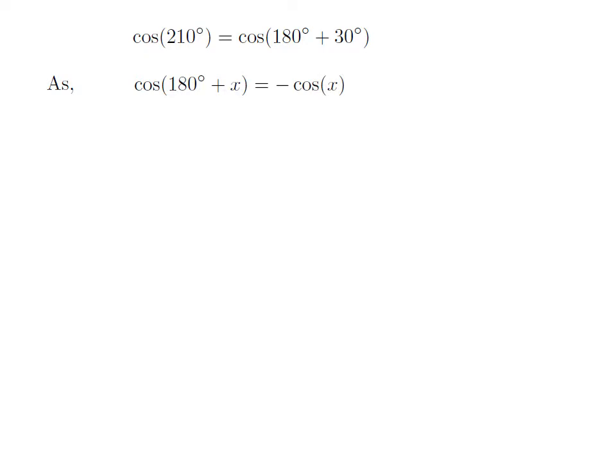As we know, the trigonometry identity cosine of 180 degree plus x is equal to minus cosine of x.